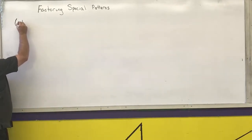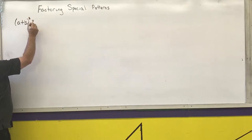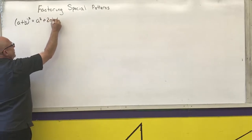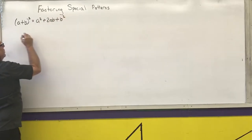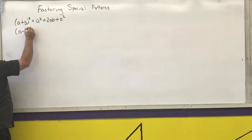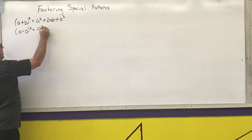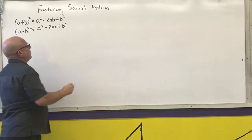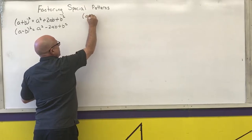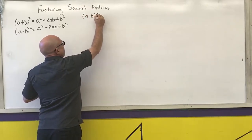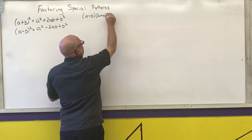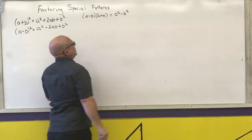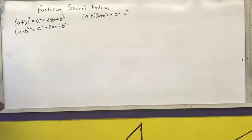if I have a binomial squared, that's the first term squared plus two times the product plus the last term squared. We also had our difference of squares pattern, which is the first term squared minus the last term squared. So those are our quadratic patterns.